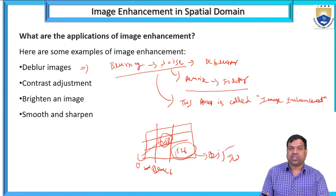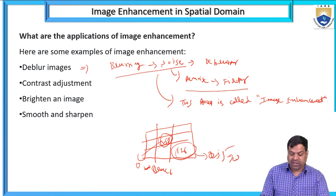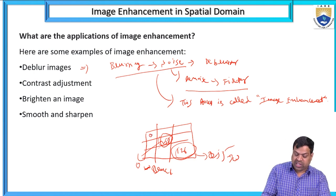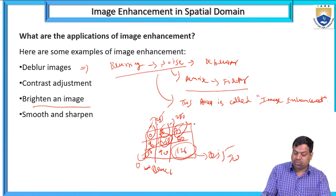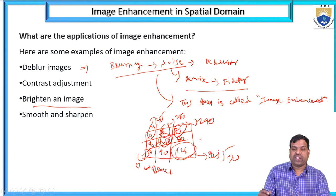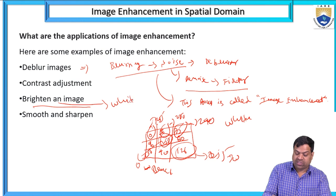Brightening an image means we are increasing the pixel values. Suppose pixels have values 0, 50, 75, 90, 60, 50, 40, 126 — brightening means improving them toward 255, 250, 240. Brightness means converting toward white, so black to white.